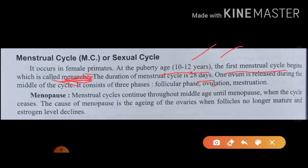The duration of the menstrual cycle is 28 days. One ovum is released during the middle of the cycle. The menstrual cycle consists of three phases: follicular, ovulation, and menstruation.